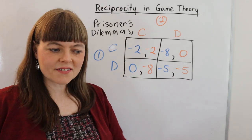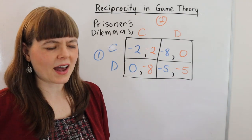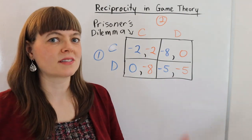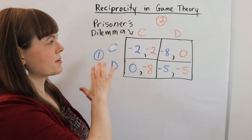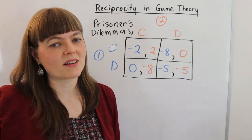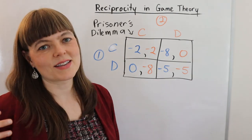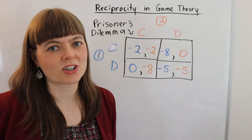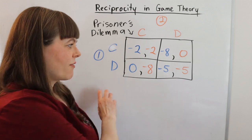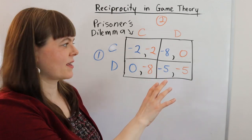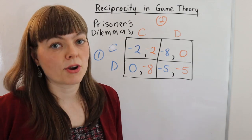A lot of times people hear about the prisoner's dilemma for the first time and think it doesn't really capture a lot of real-world scenarios. So if we learn to build reciprocity and other instinctive human reactions into our models — natural ways people respond to situations — and build those into the way we think about payoffs, we can actually have more predictive game theory models.